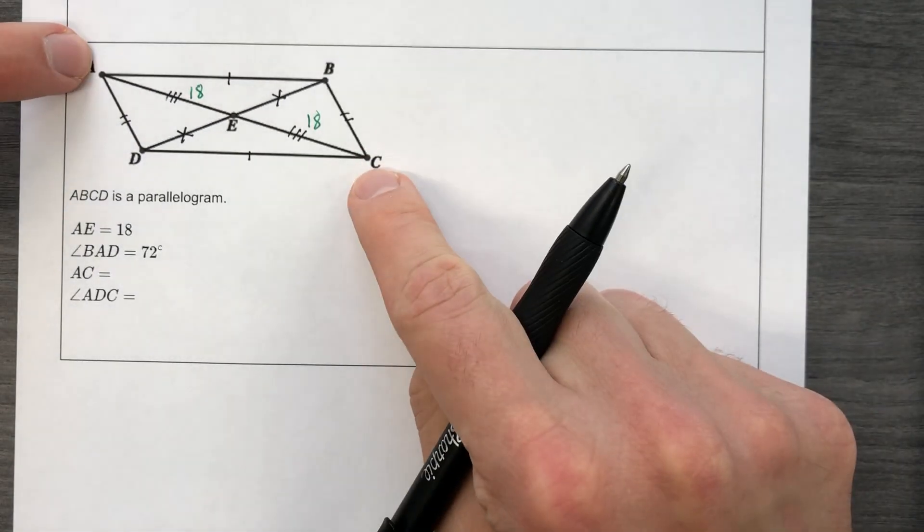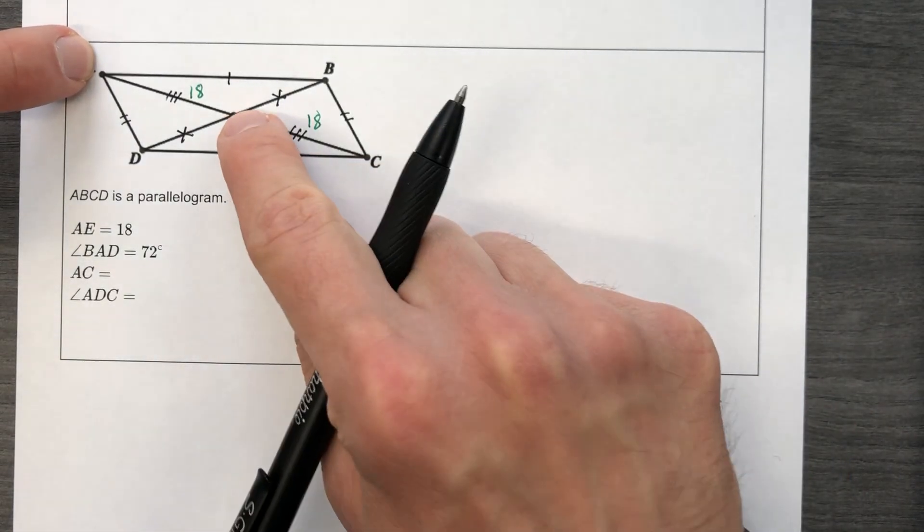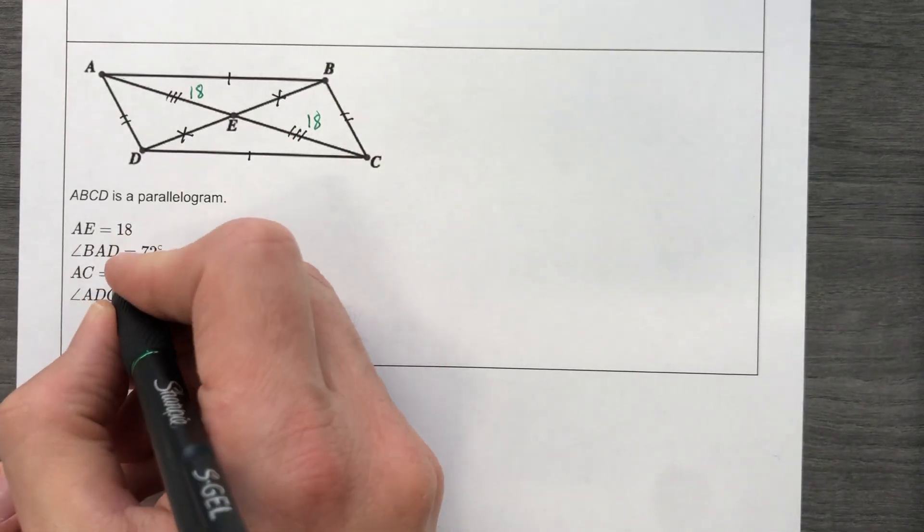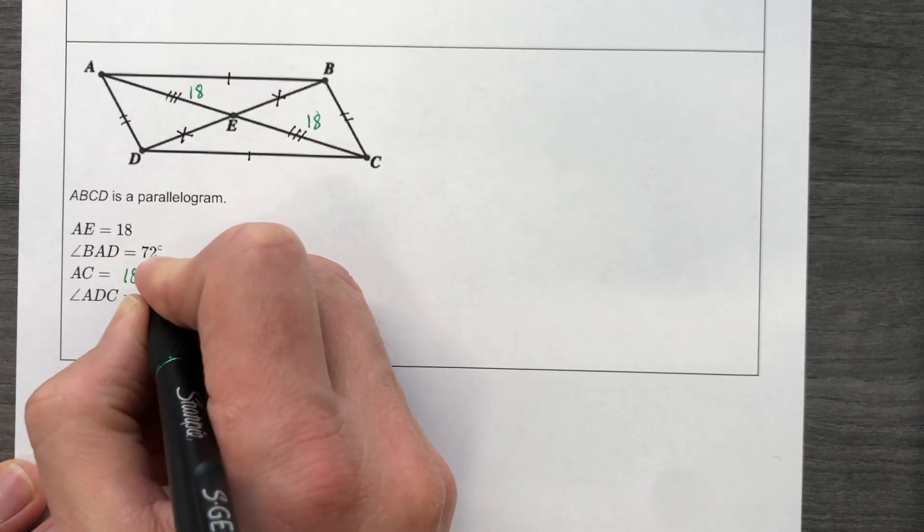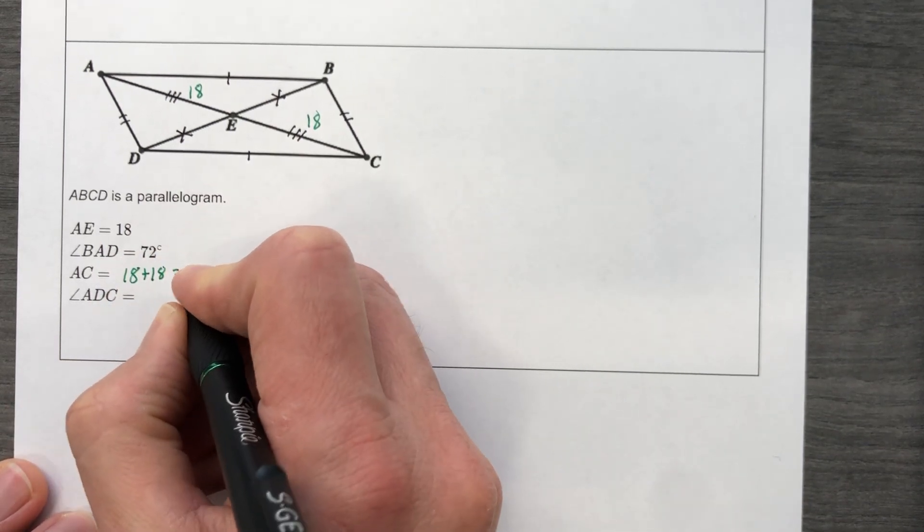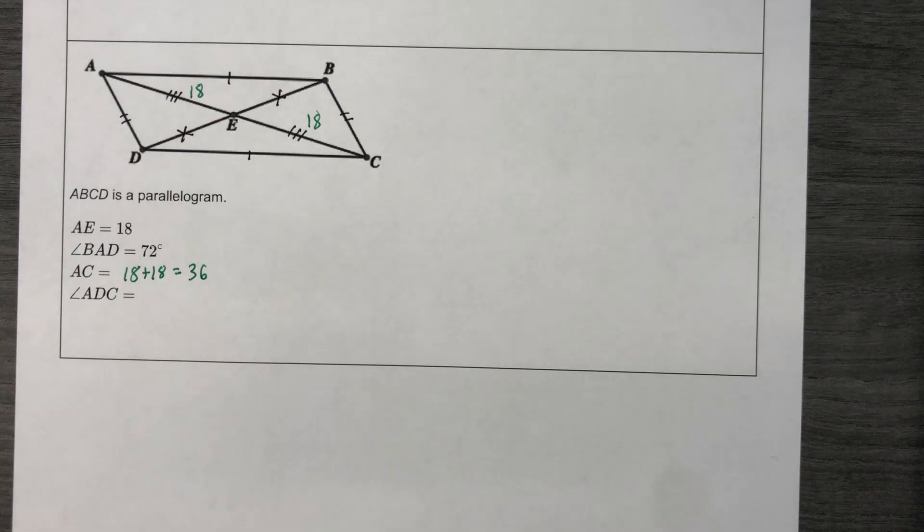So if they ask for A, C, and they do, it's 18 plus 18. I'm going to write that just in case you look back at your notes later and you're like, man, where did he get 36? That's where I got it from.